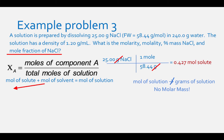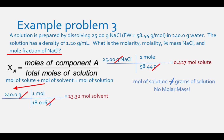For the aqueous solution, take the grams of solvent — 240.0 g — and divide by the molar mass of water, 18.016 g/mol, which equals 13.32 moles of solvent. Then add moles of solute (0.427) to moles of solvent (13.32), giving 13.747 total moles of solution.